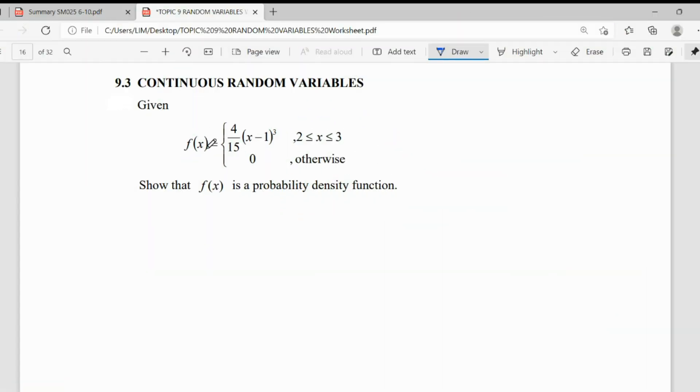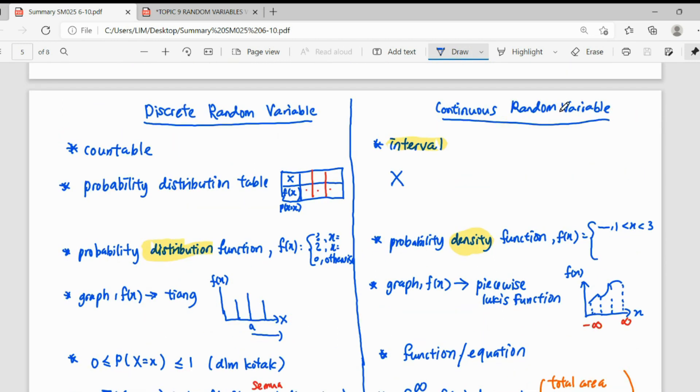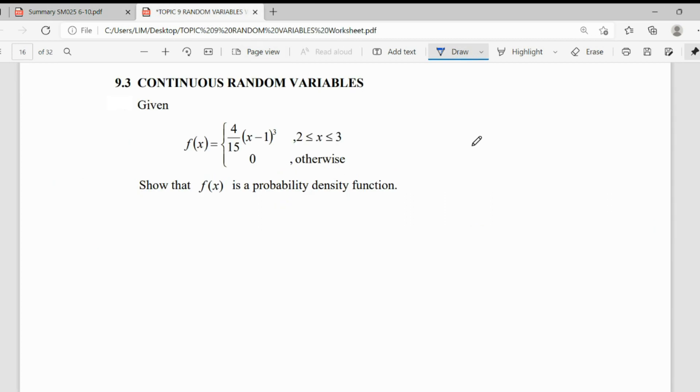Given a function for a continuous random variable, they said show this function is a probability density function. When we deal with continuous random variables, most of the time we will draw our interval so that we can view our function clearly.